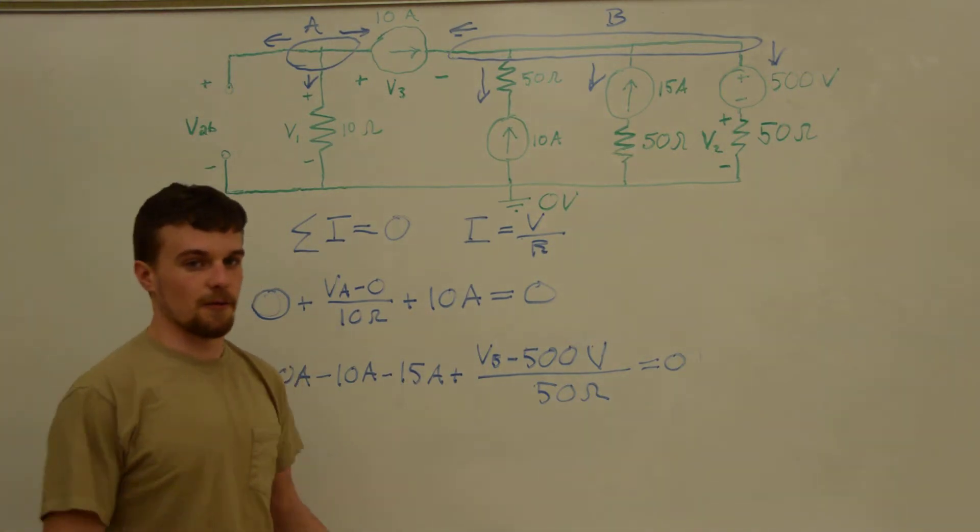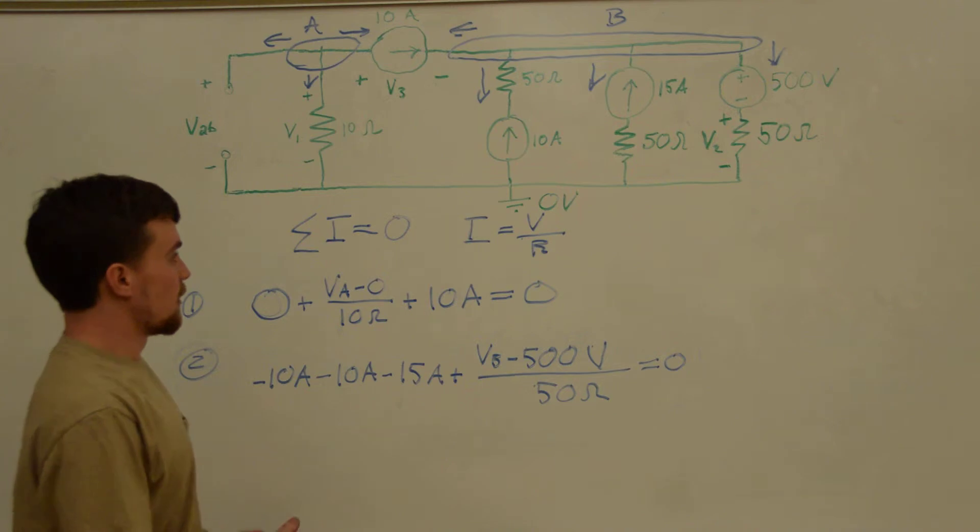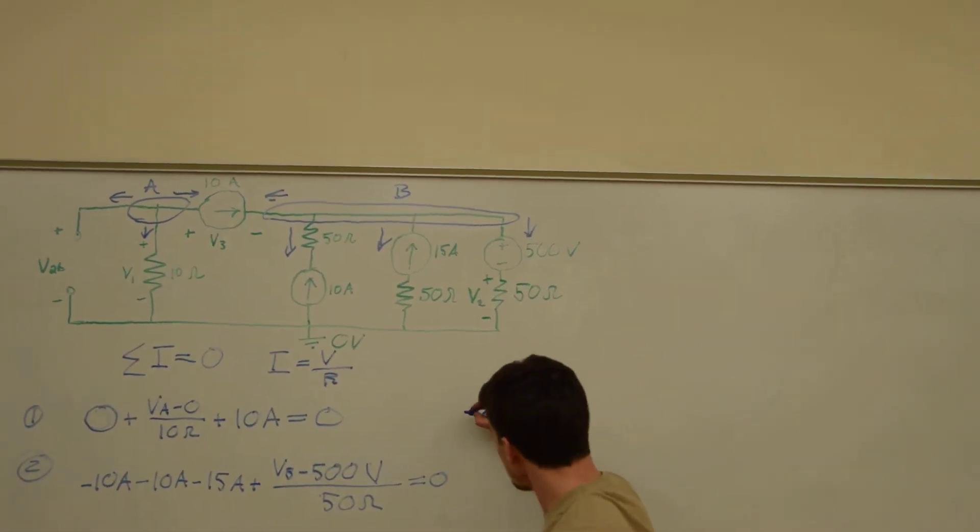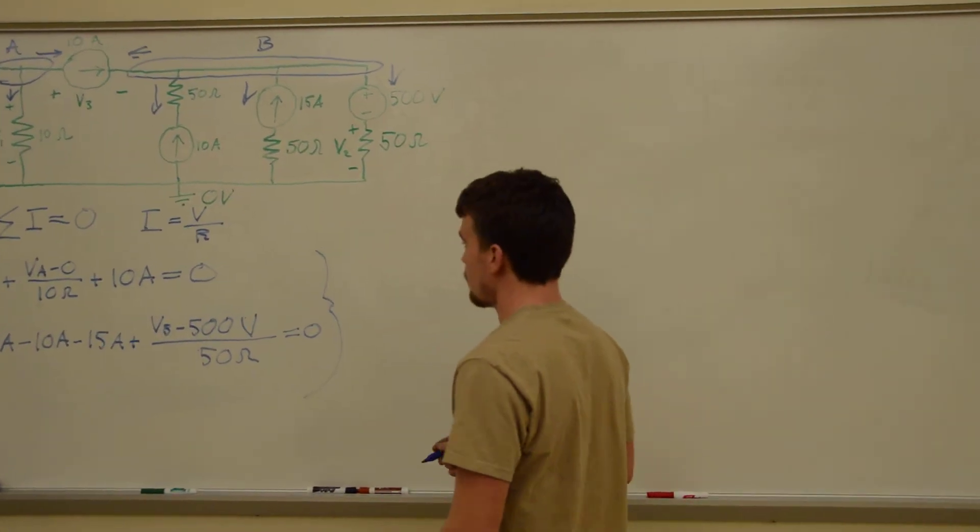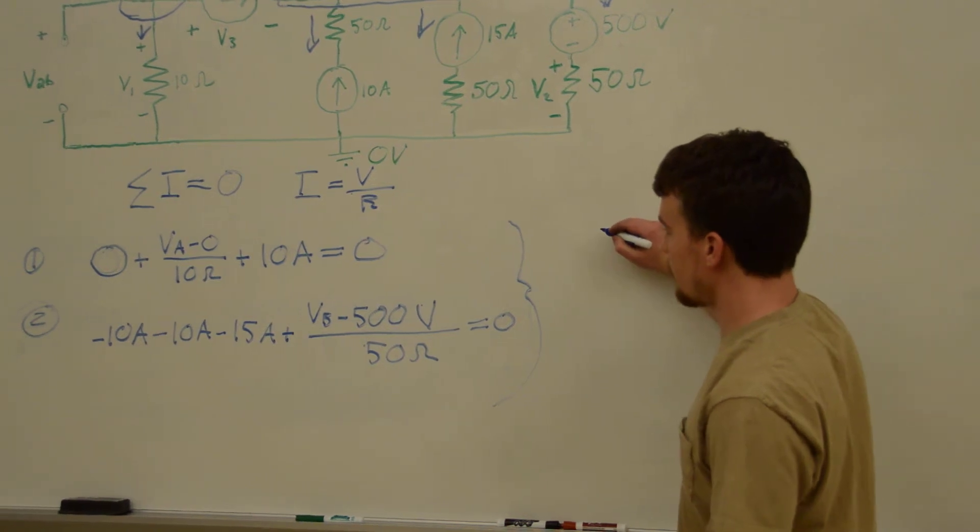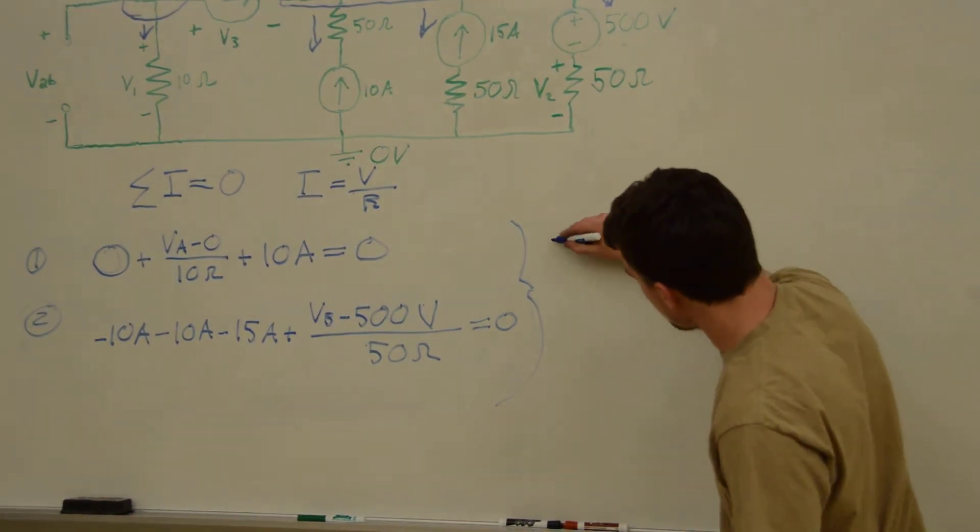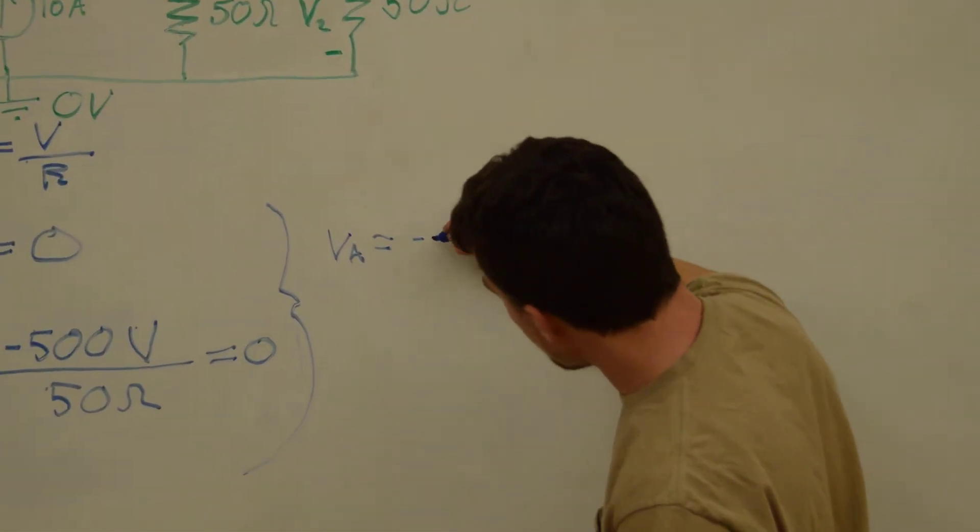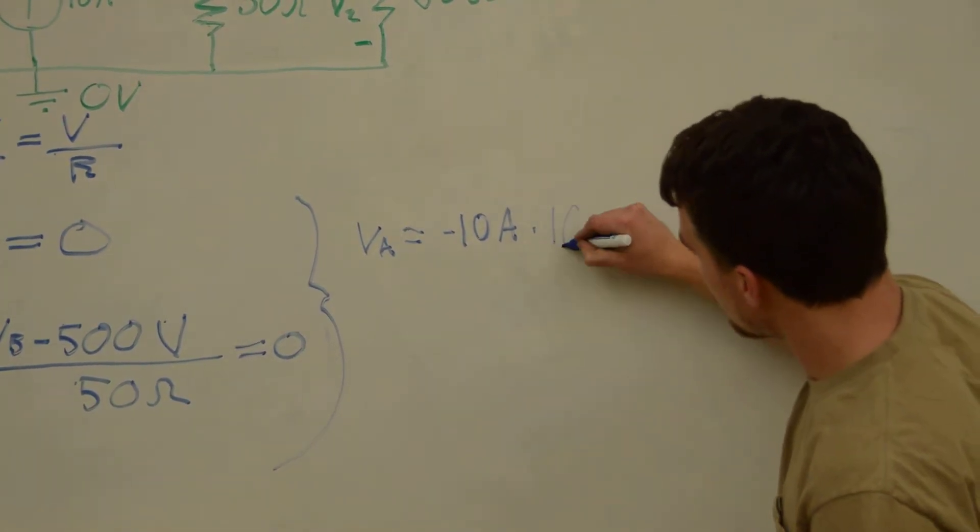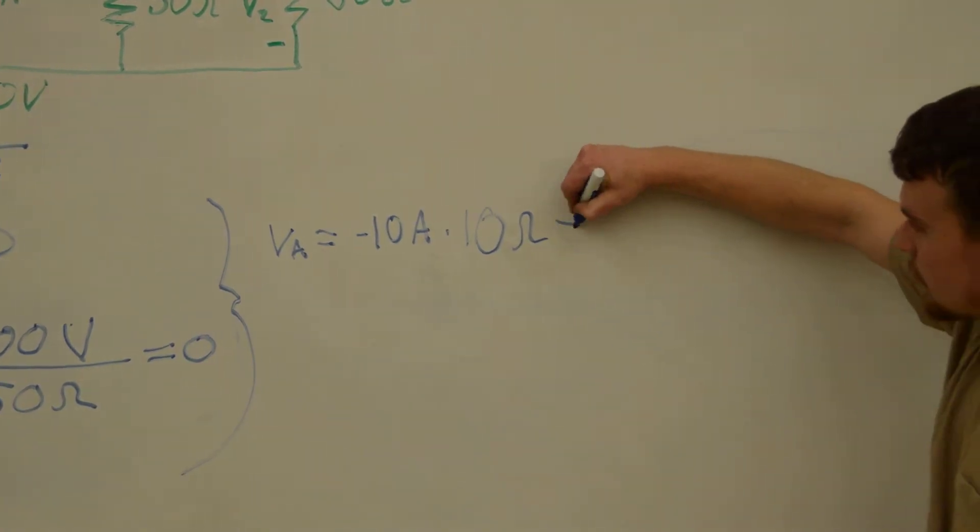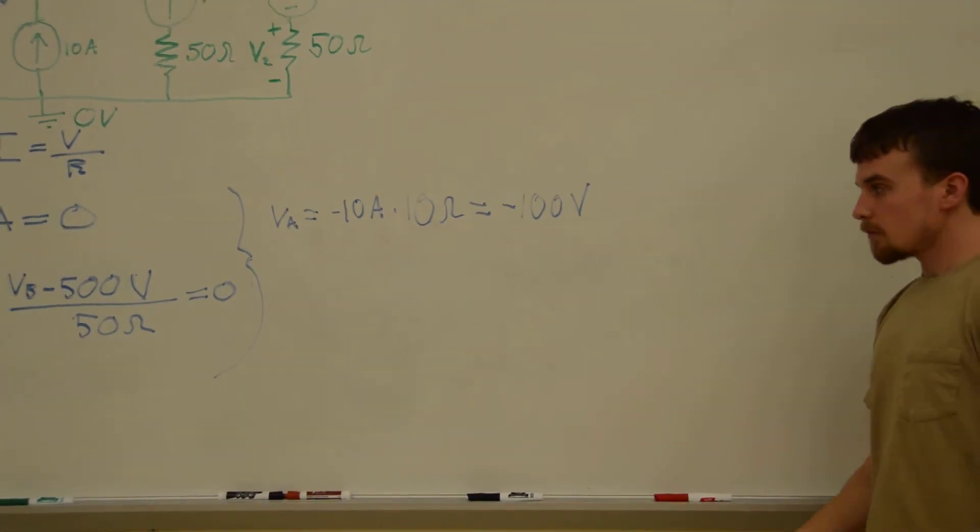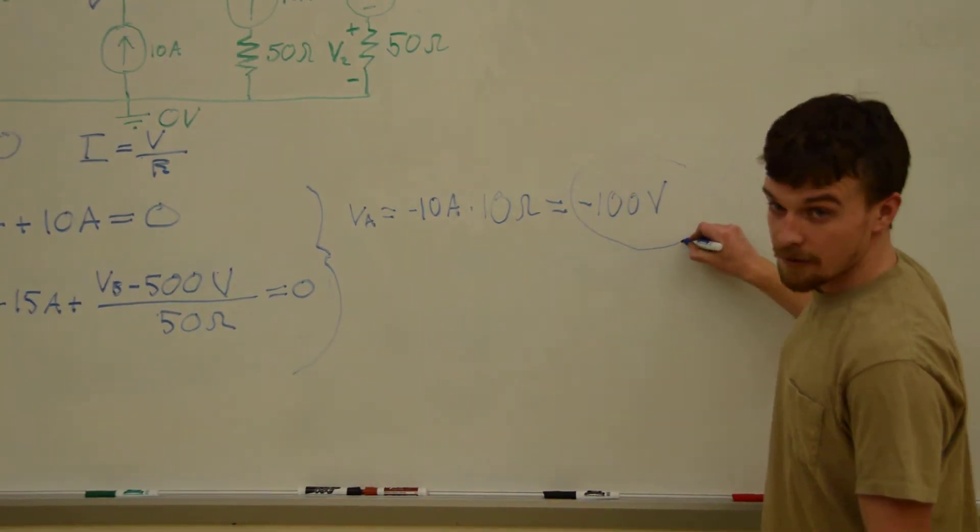Now, we have two unknowns and two equations, so we should be able to solve them and get the values of these nodes with reference to that node, ground. So, first, we'll use equation one to find VA. And that is going to equal minus 10 amps, VA minus 10 amps times 10 ohms, which equals negative 100 volts. This is the actual value of VA.